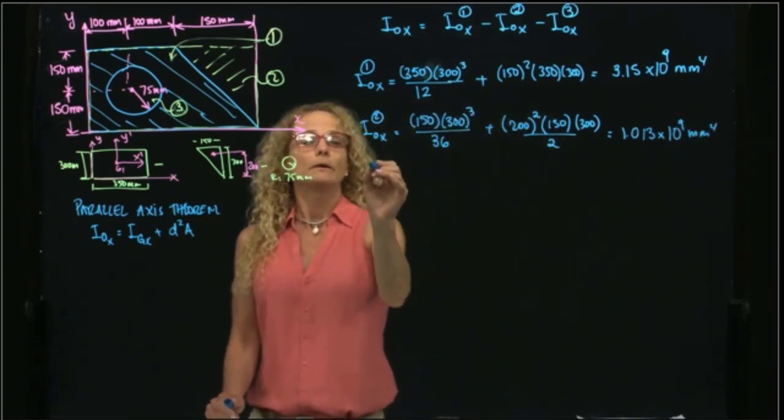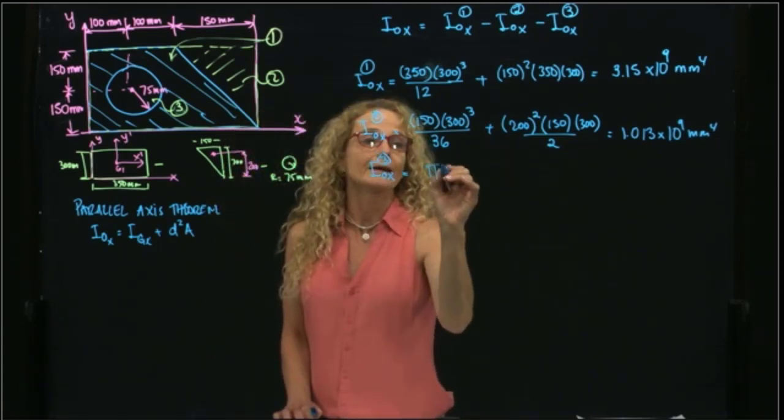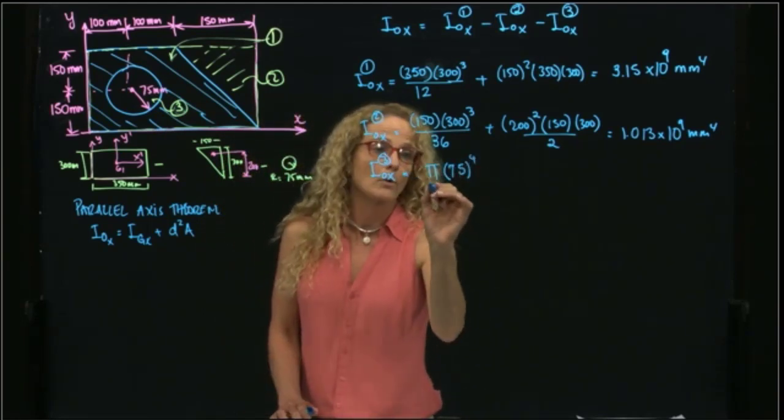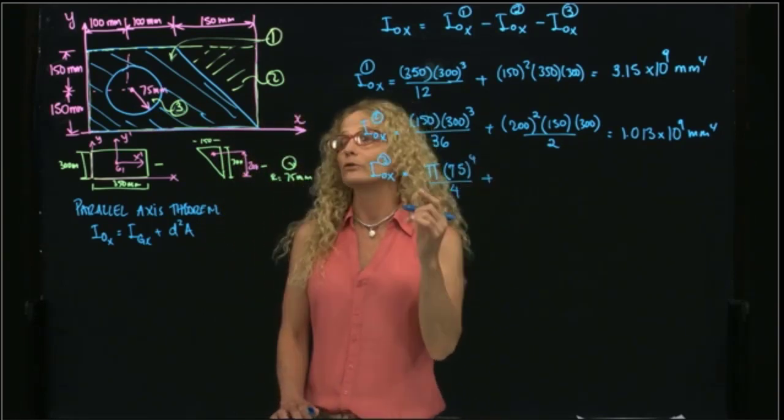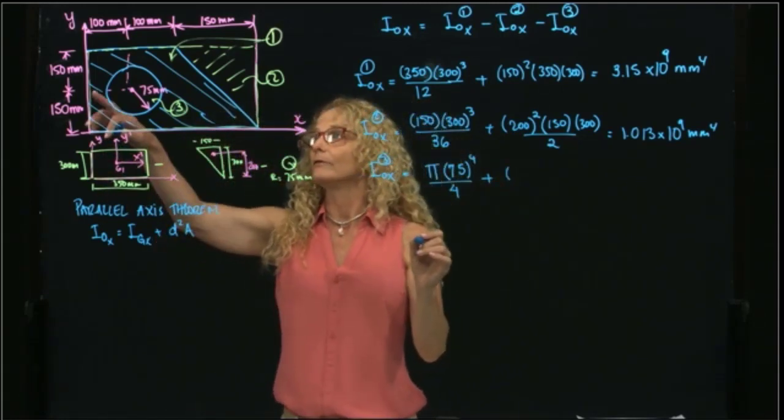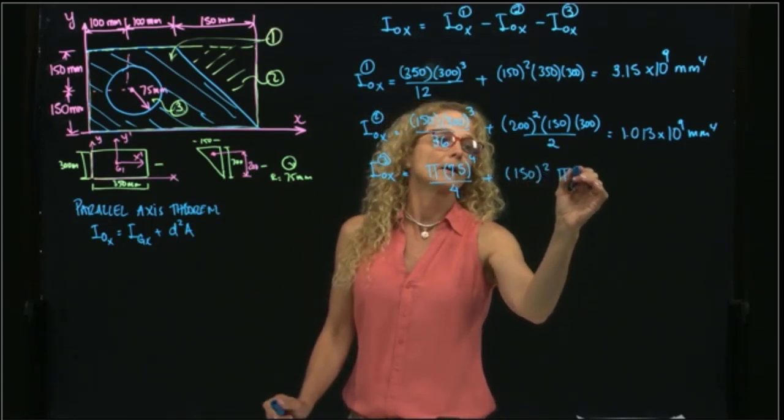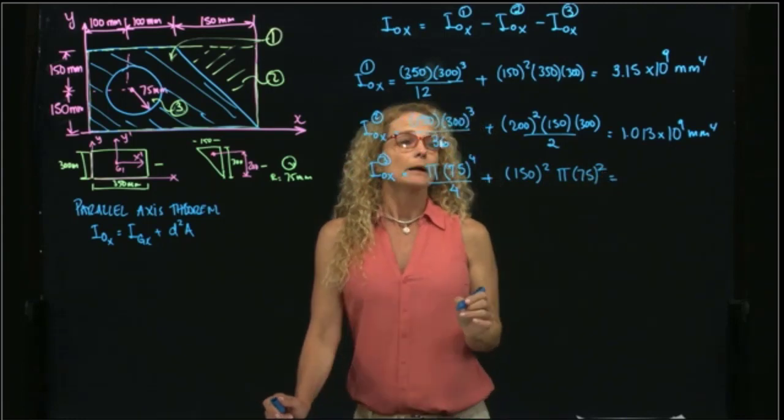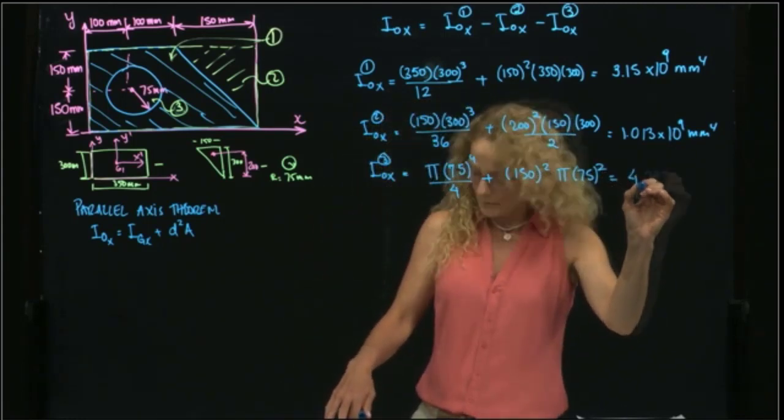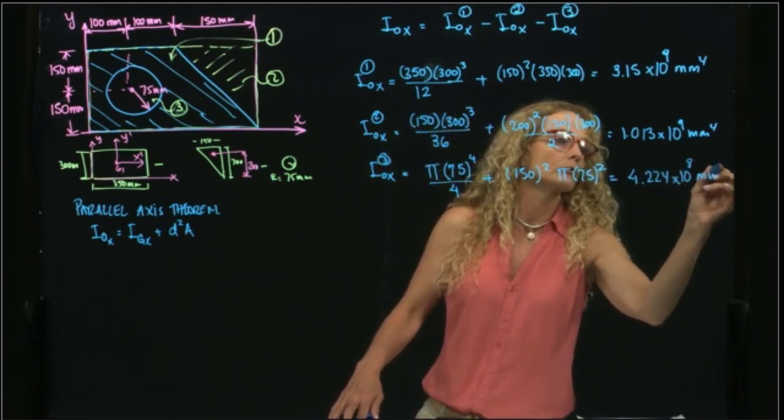And the third one is the circular shape. The measure is pi r, in this case the r is 75 to the fourth divided by 4. And here we have to use the parallel axis theorem again, and that will give me the distance is 150 squared, and the area is pi r squared. And that gives me the value of 4.224 times 10 to the eighth millimeters to the fourth.